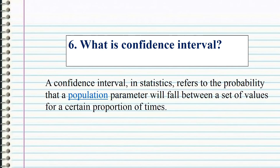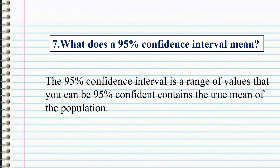A confidence interval, in statistics, refers to the probability that a population parameter will fall between a set of values for a certain proportion of times. The 95% confidence interval is a range of values that you can be 95% confident contains the true mean of the population.